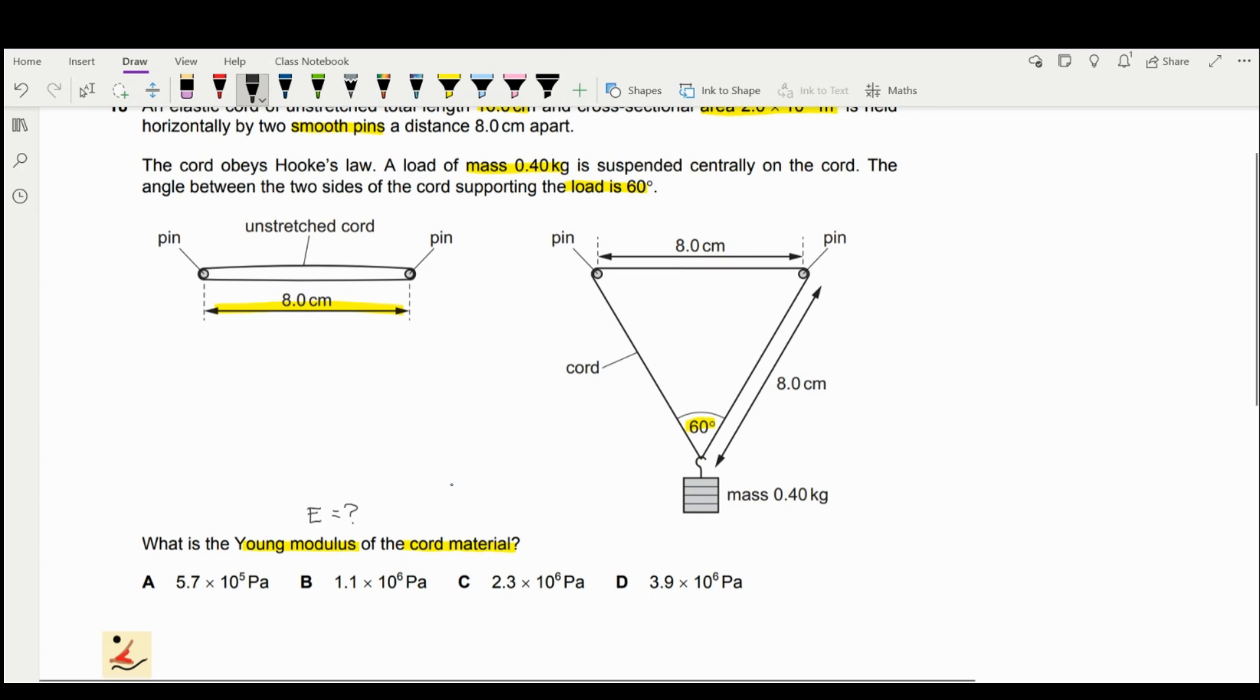Let's gather information here. You have your original length, 16 cm. You have your cross-section area, which is 2.0 times 10 to the power of negative 6 m².